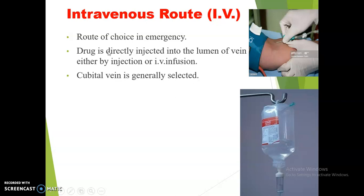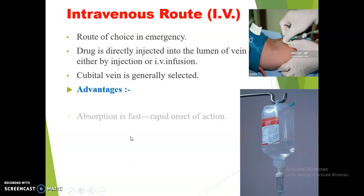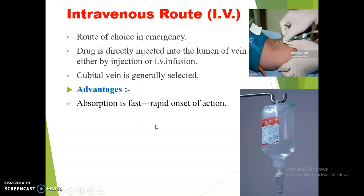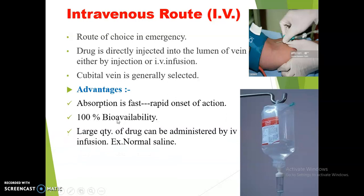Now let us discuss the intravenous route. As the name indicates, the drug is injected directly within the lumen of a vein; generally the cubital vein below the elbow is selected. This is the route of choice in emergency cases because the drug is directly injected into the vein and immediately reaches the blood, so action starts very quickly. Advantages include fast absorption, rapid onset of action, 100% bioavailability, and the ability to administer large quantities such as 500 ml of normal saline or dextrose by IV infusion.